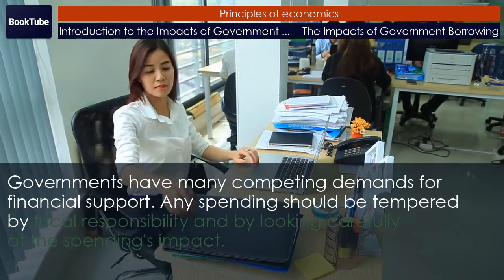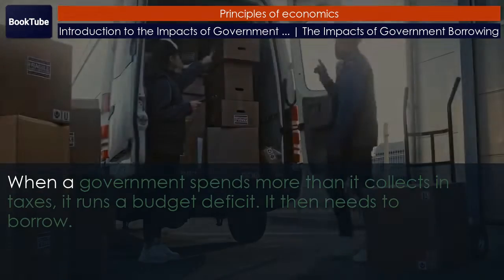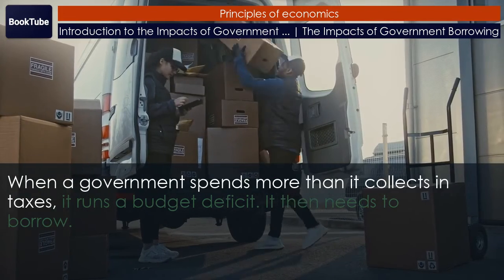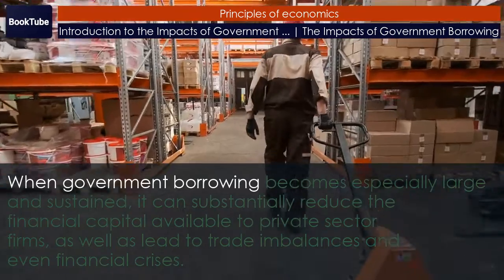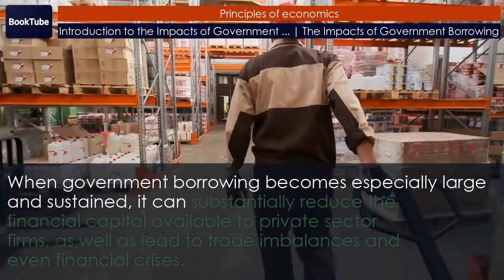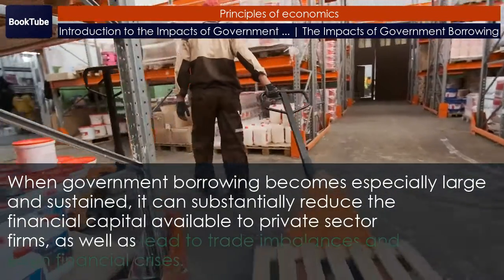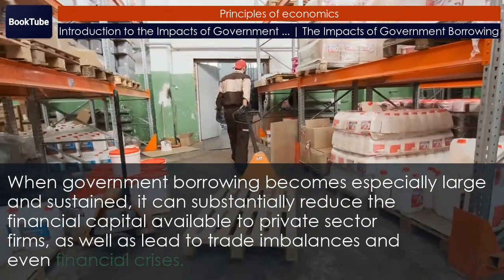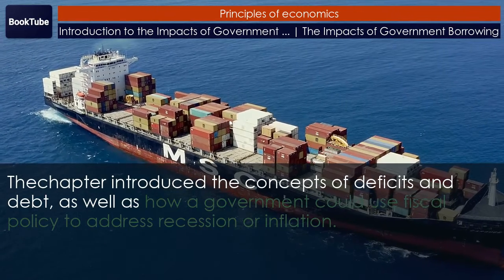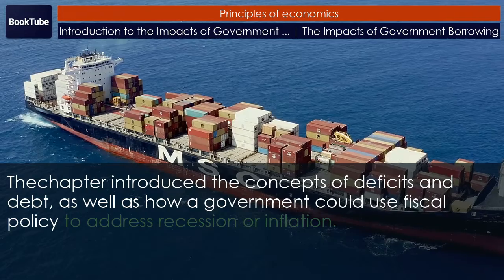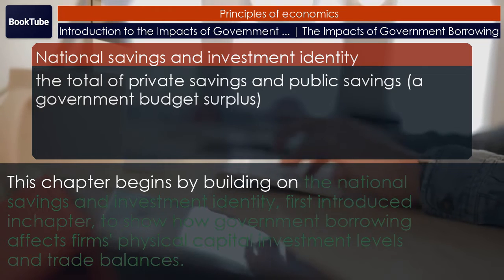Governments have many competing demands for financial support. Any spending should be tempered by fiscal responsibility and by looking carefully at the spending's impact. When a government spends more than it collects in taxes, it runs a budget deficit and then needs to borrow. When government borrowing becomes especially large and sustained, it can substantially reduce the financial capital available to private sector firms, as well as lead to trade imbalances and even financial crises. This chapter builds on the concepts of deficits and debt, as well as how a government could use fiscal policy to address recession or inflation.